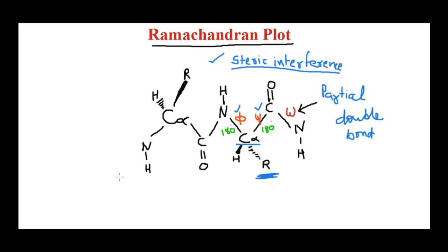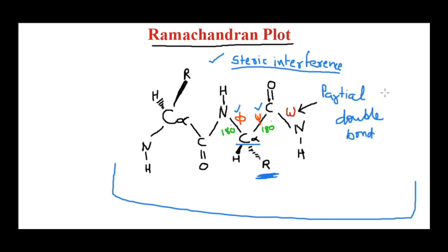So these are the two points we should be very clear on: first, the peptide bond has no rotation because of the partial double bond character; second, freedom of rotation exists with the two bonds attached to the alpha carbon — that is phi and psi. However, because of the side chain, there is steric hindrance and not all bond angles are allowed; there is restriction because of steric interference.